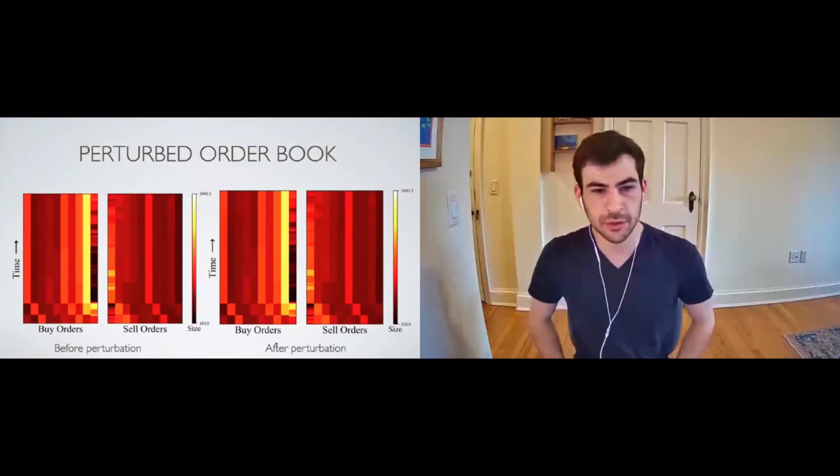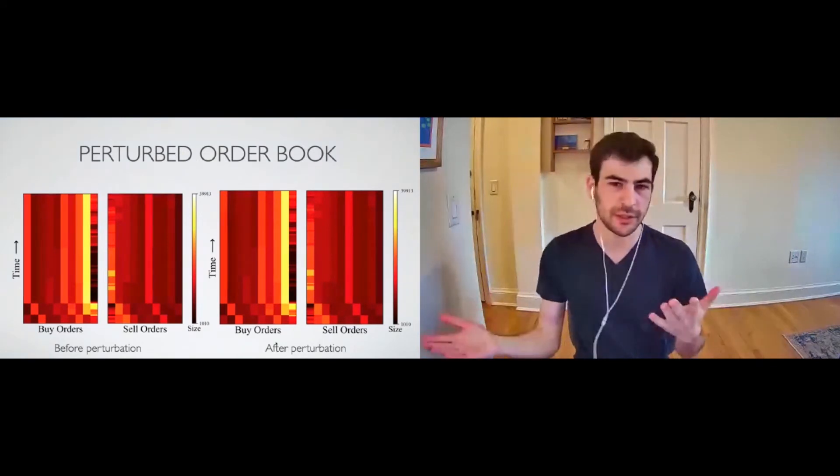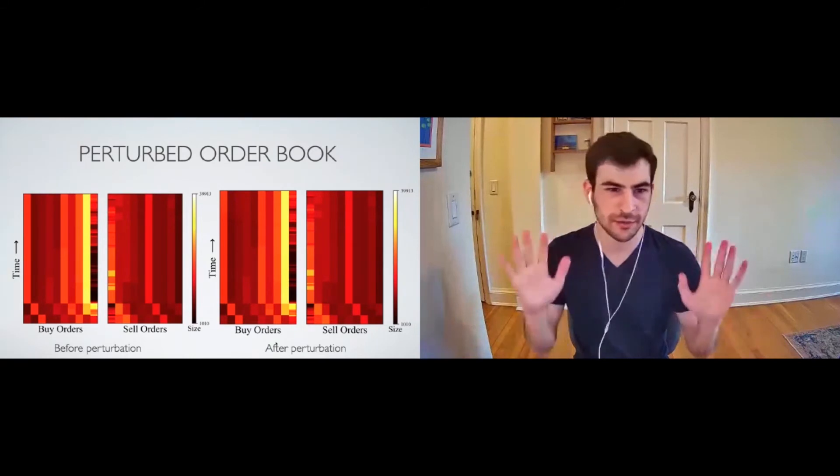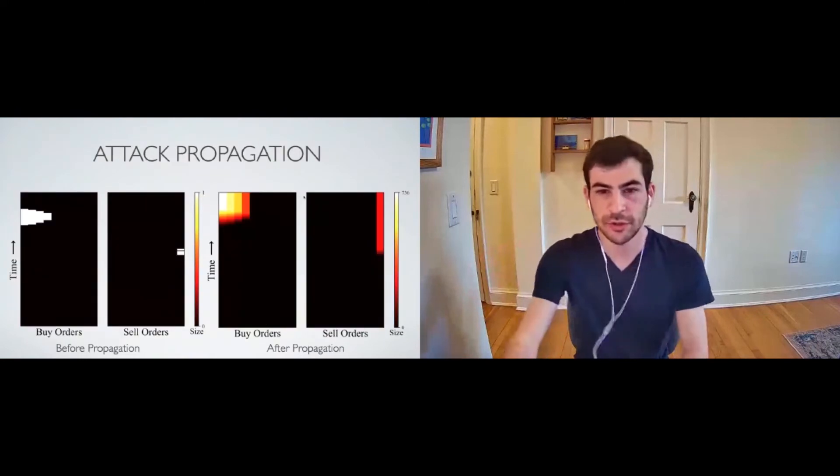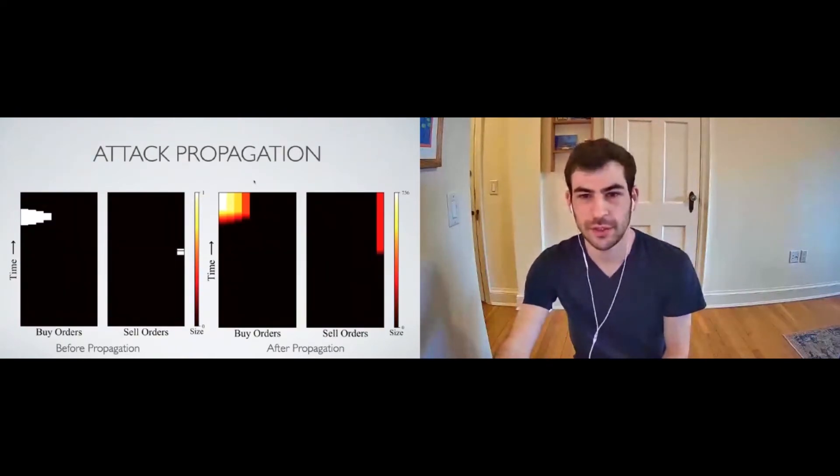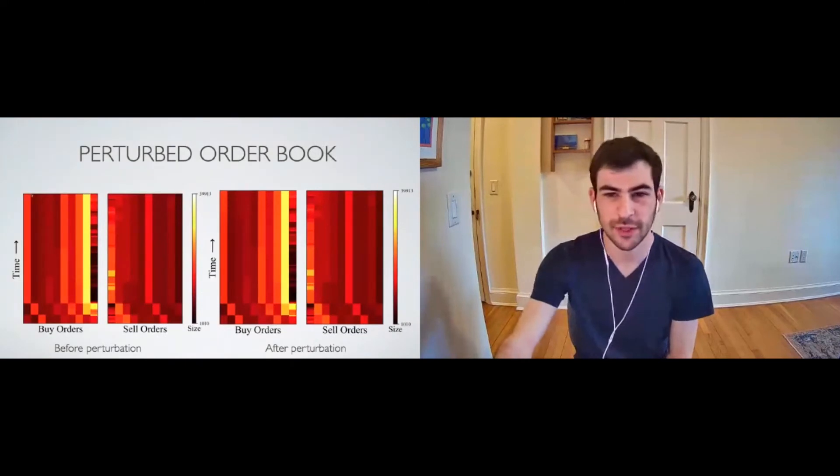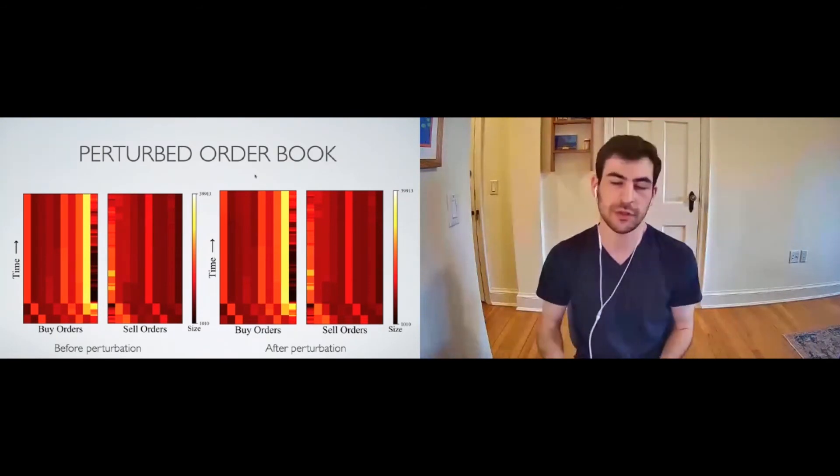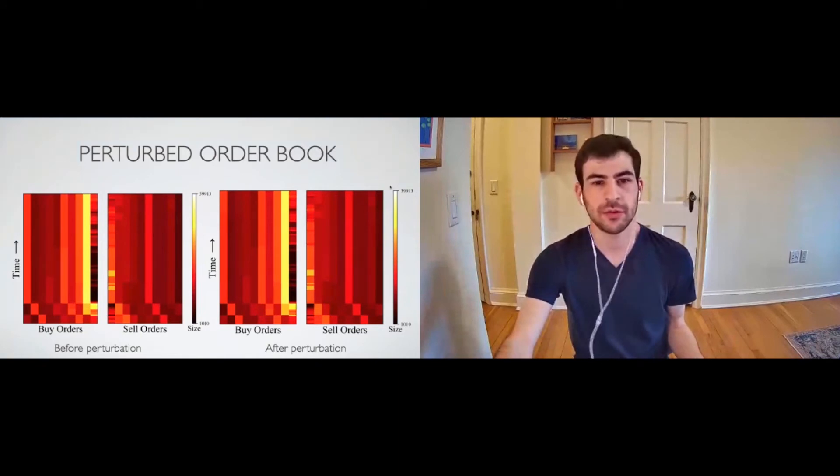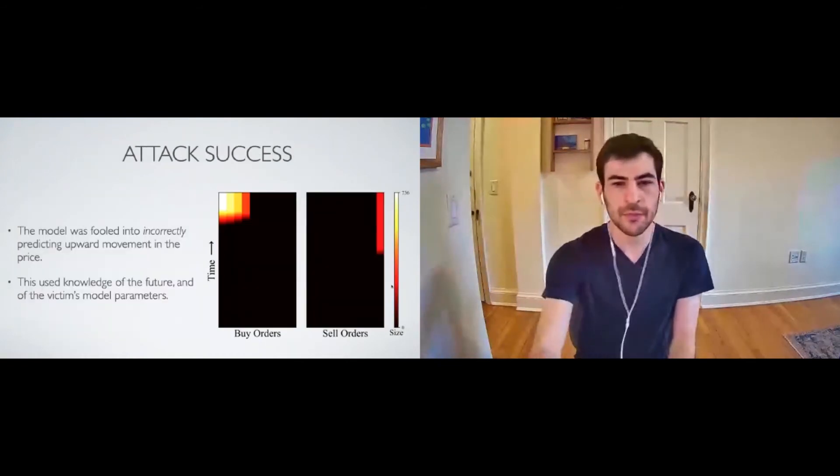And this is what the perturbed order book looked like. So remember that picture of the panda, we couldn't tell the difference. I might even argue it's harder to tell the difference here. But after we add that perturbation that I was just showing you, this little thing that looks like a flame, you can't tell the difference. Because these are red things, they're more than ten thousand shares, and we added at most seven hundred to any one of these rows. And furthermore, they don't affect the size weighted average later on. One, by assumption, the attacker can choose to cancel the orders, but also they're so small that they're actually not moving the size weighted average. Meanwhile, this attack fooled a model into incorrectly predicting upward movement in the price.